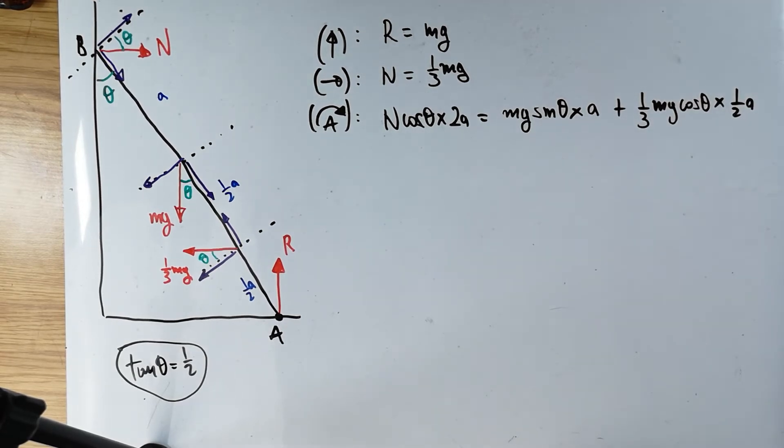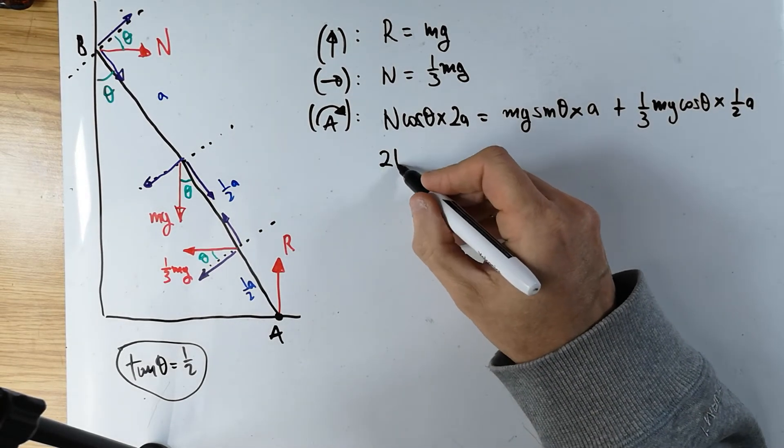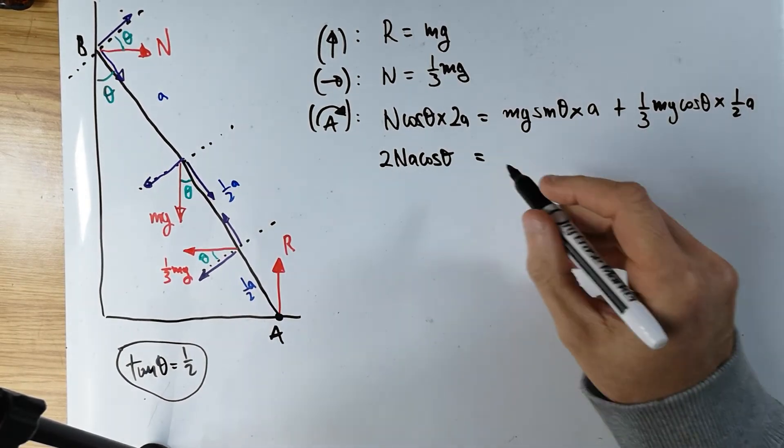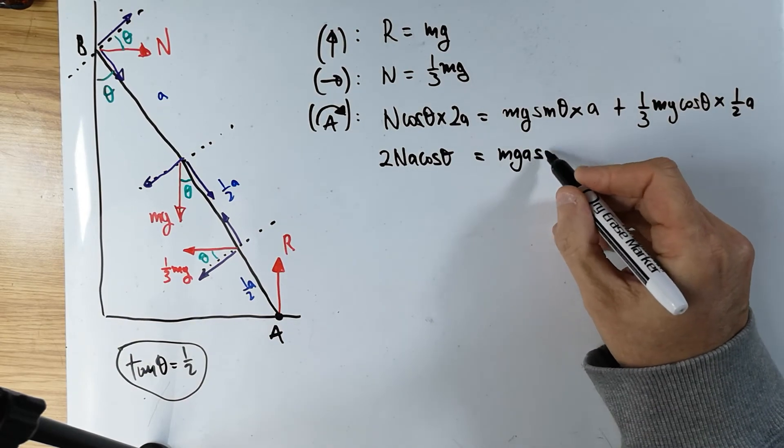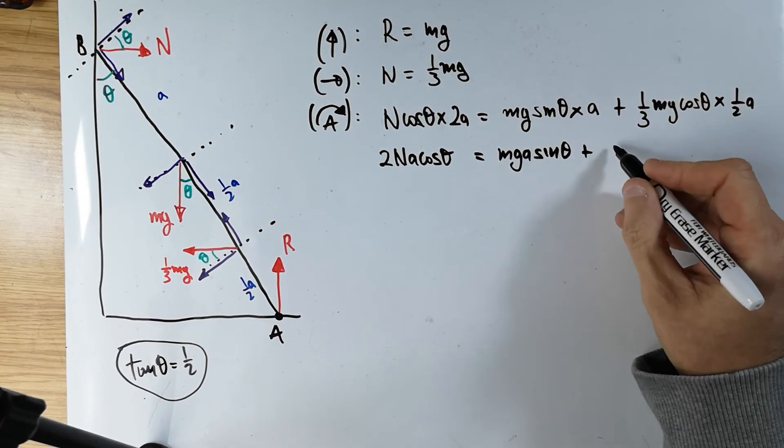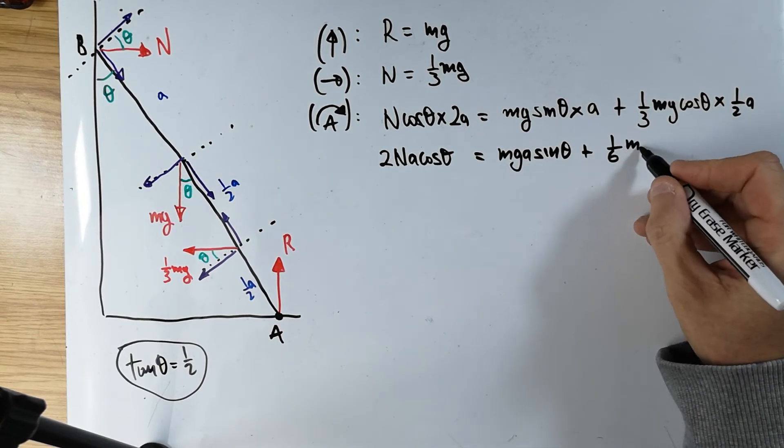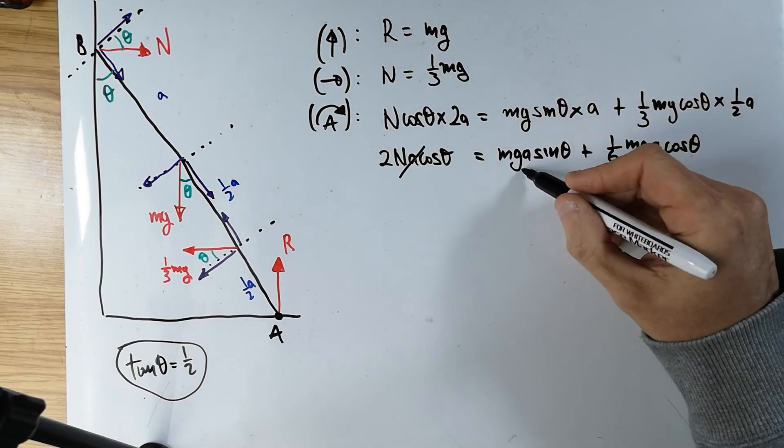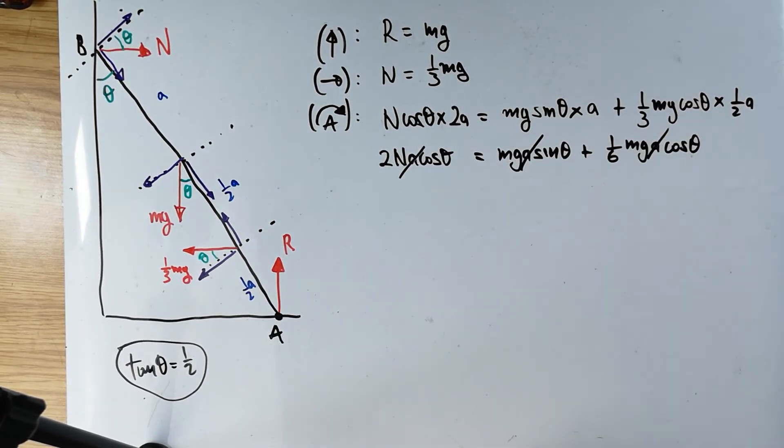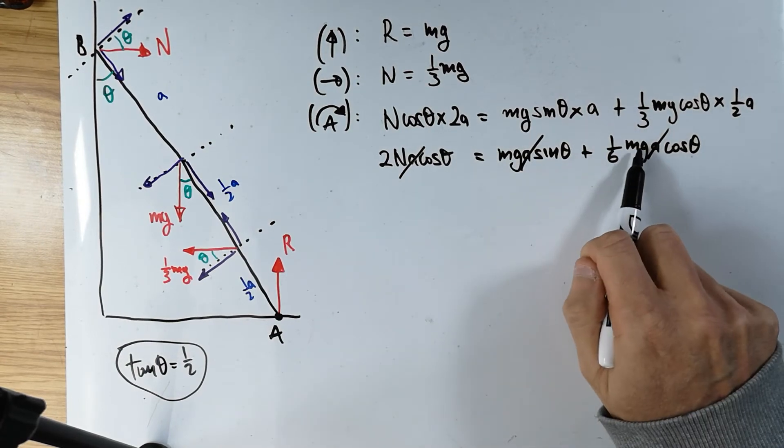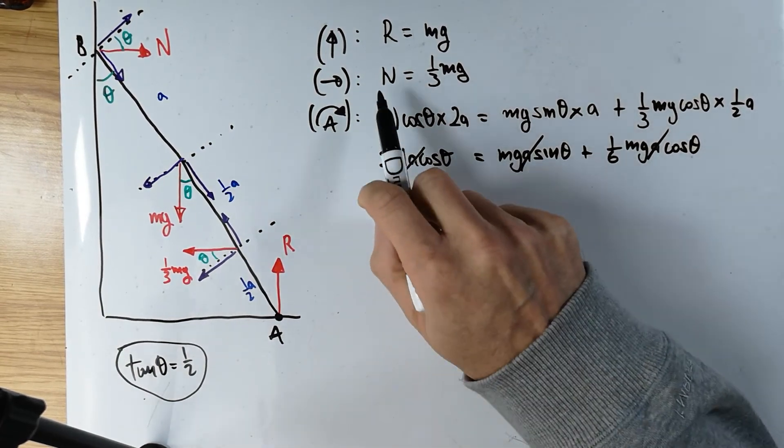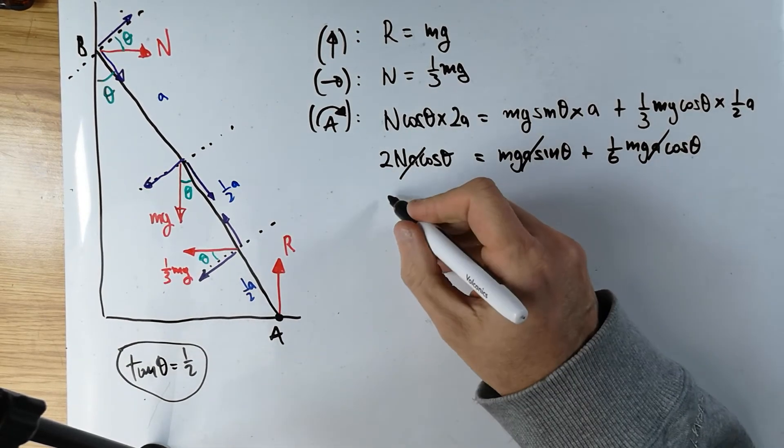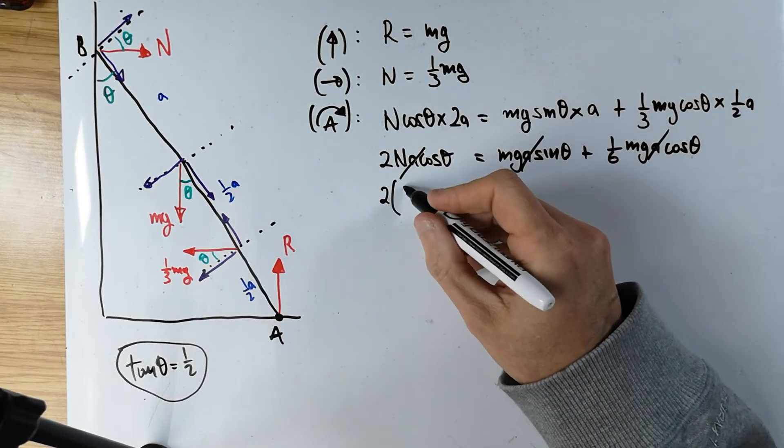And now we have to tidy this up a little bit. So first of all, 2NA cos theta, equal to MgA sine theta, plus third times a half is a sixth, MgA cos theta. I've just noticed everything has an A. So let's get rid of it. Divide this A through. Wouldn't it be nice if there was, because this has Mg, this has Mg, but it doesn't have Mg. But if you look at this equation, this equation up there, that has Mg in it.